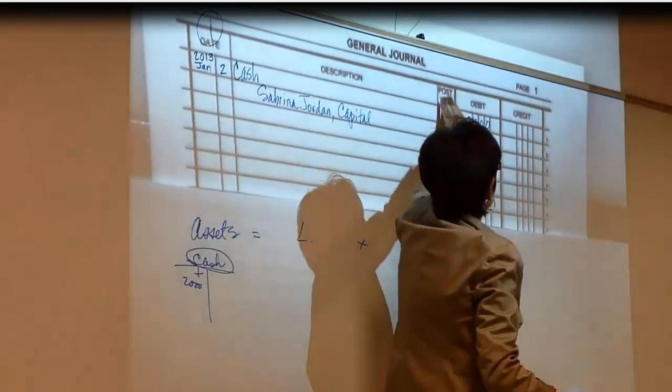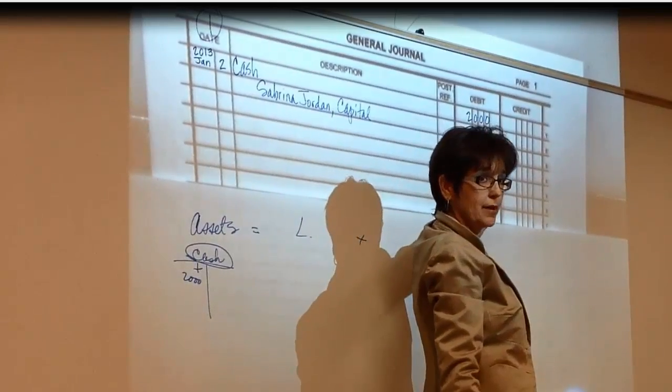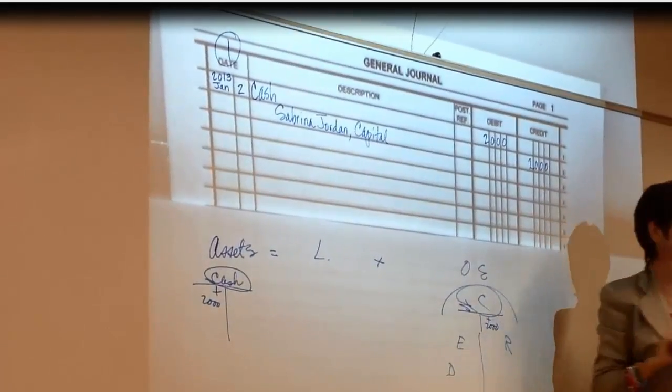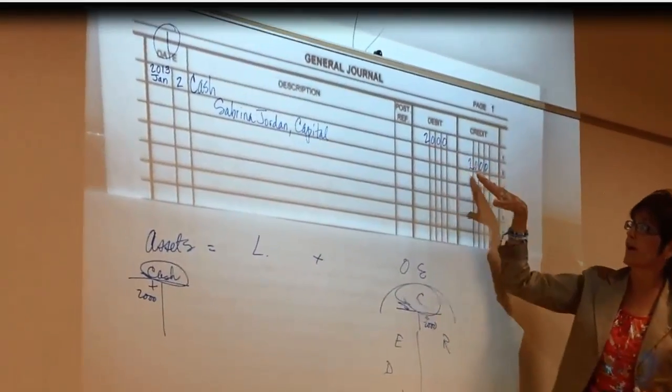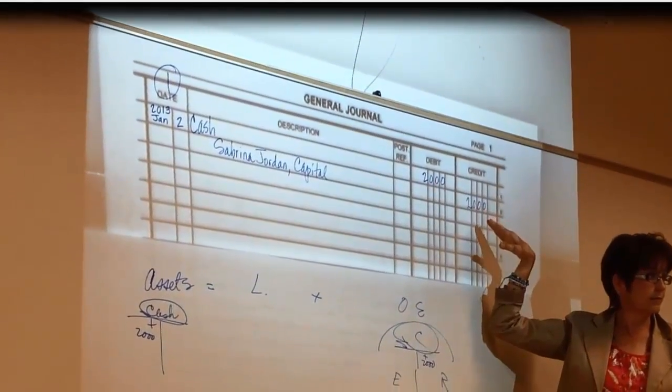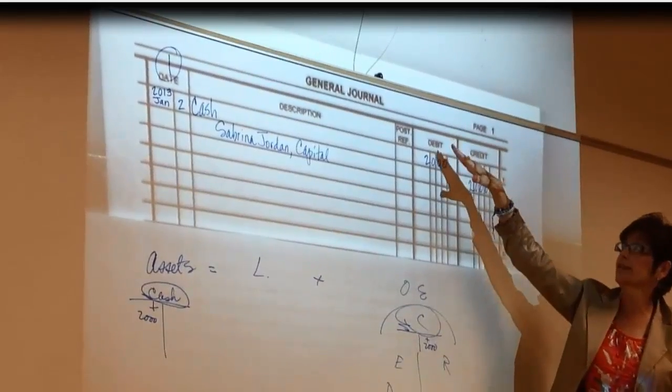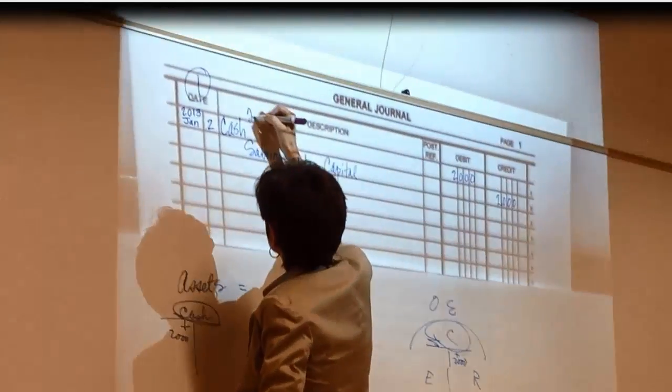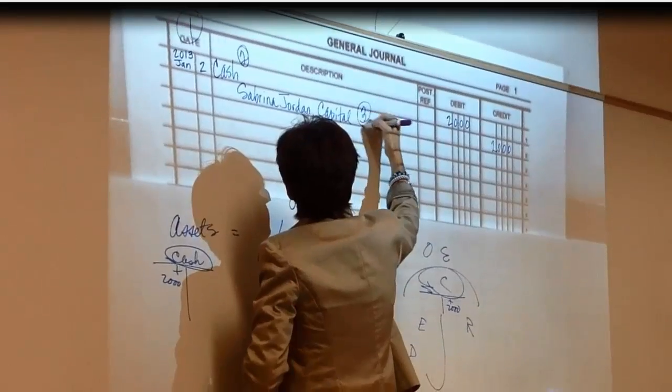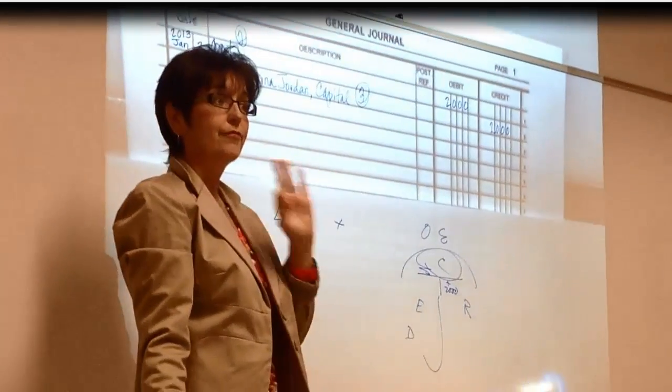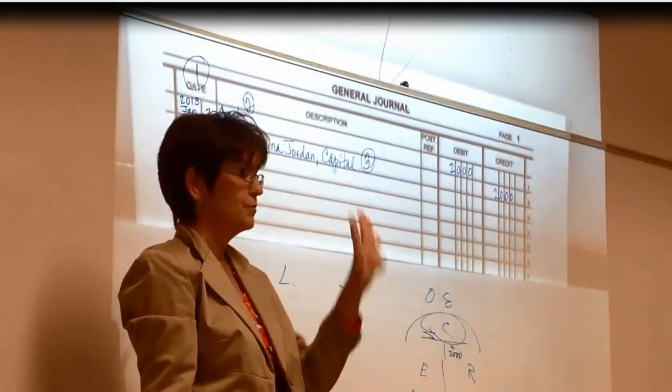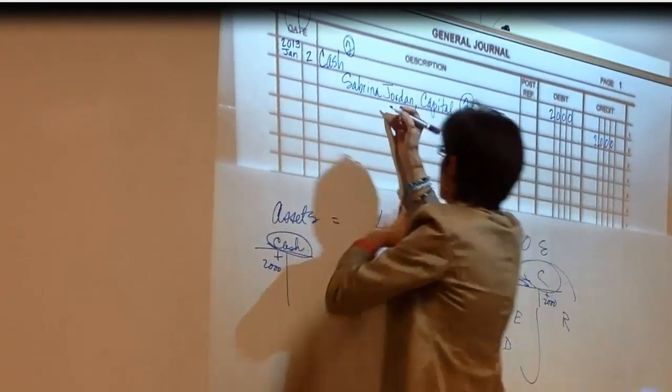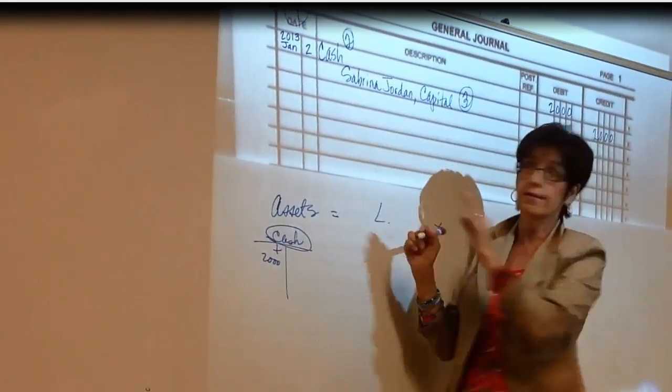Remember that the name of the capital account for a sole proprietor always begins with that sole proprietor's name. So we had Sabrina Jordan as our entrepreneur, right? And then I will follow that with capital. I'm going to skip post reference column for now. Do I write anything in the debit column? No. Instead, I'm going to write it in the credit column. Can I easily look at this and see if I'm in balance? Yes. It's easy to look at now, isn't it? I can look and say debit, credit, both are $2,000. I'm good. That is step number two is the debit. Step number three is the credit.